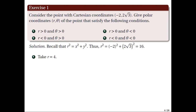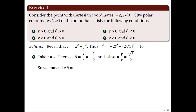We want to solve for a positive value of theta satisfying the following trigonometric equations. We have cosine theta equal to x over r equal to negative one half, and sine theta equal to y over r equal to square root of 3 over 2. Based on these equations, we want to find a positive angle theta whose terminal side is in the second quadrant, and that angle is theta equal to 2 pi over 3. Hence, one polar representation of the point is (4, 2π/3).